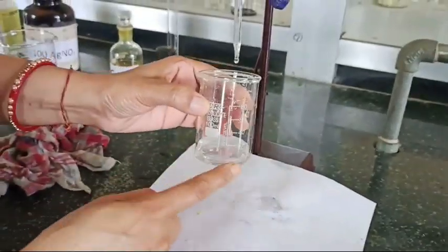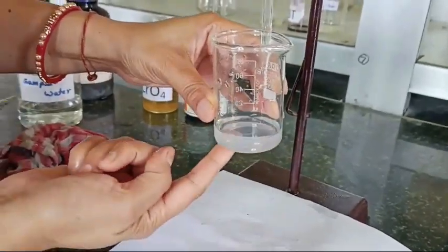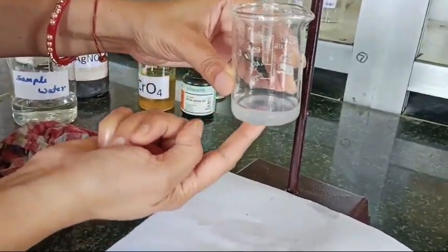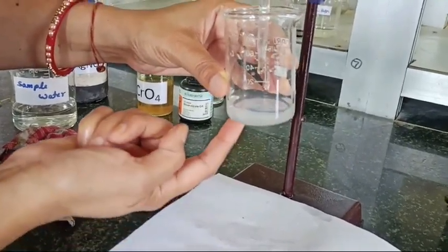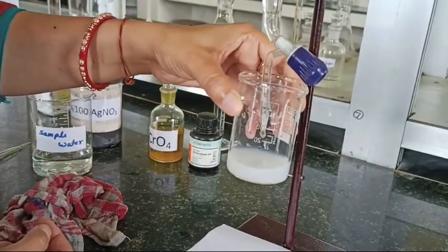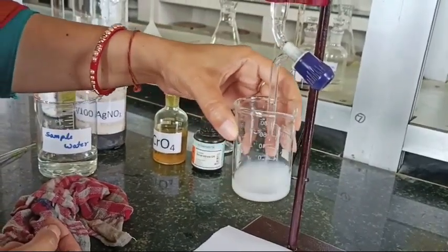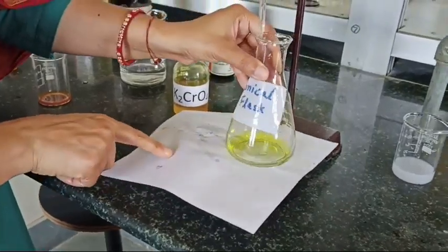I just show you why we have added indicator to this solution. This is NaCl solution and we are dropwise adding silver nitrate to this. So here you can see the turbidity of the solution. It shows that AgCl precipitates are started forming.